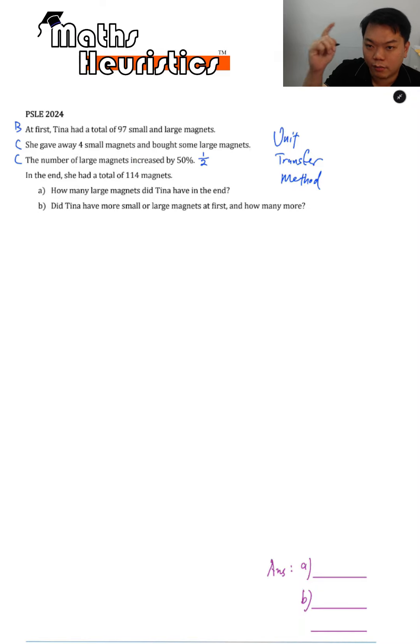Remember to convert percentages into fractions in their simplest form first, so that it will be easier for you to allocate your units. At the end, she had a total of 114 magnets.